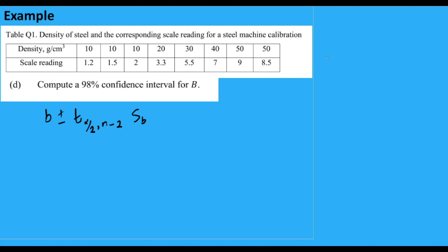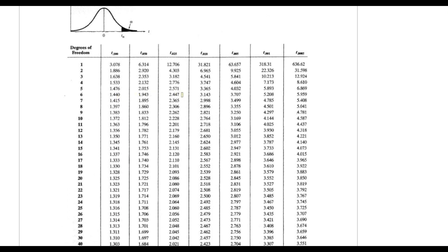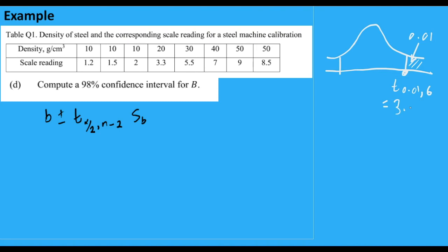So I would start by finding the T values. So for confidence interval, it is 2K. And this would be T alpha over 2. And alpha is 2%. So one part of alpha is 0.01. This would be T 0.01 comma. Our n is 8. 8 minus 2 is 6. So let's look for the T value. The degrees of freedom is 6. Alpha is 0.01. So the T value is 3.143. This would be 3.143.